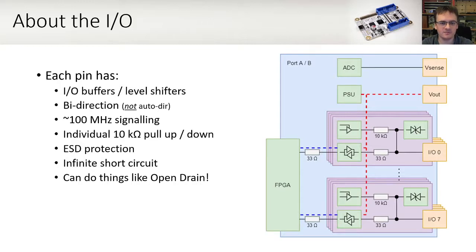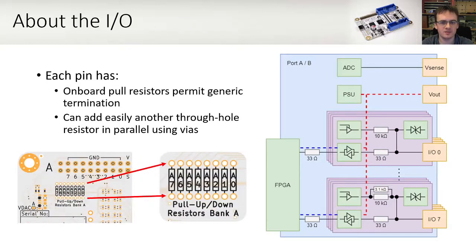Every pin has a bi-directional buffer and level shifter and can handle signals up to about 100 megahertz at 1.8 volts. The frequency depends on the translation voltage. Each pin has a 10k pull up, pull down or no pull resistor, which is connected to a tri-state buffer. Every single pin has ESD protection and can tolerate an infinite short circuit. This front end permits clever things like open drain with no external components. The onboard 10k resistors permit generic termination, but these can be easily modified with an axial resistor using the vias provided to place it in parallel.